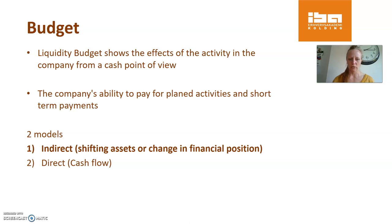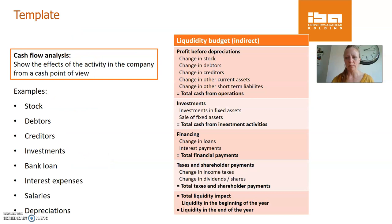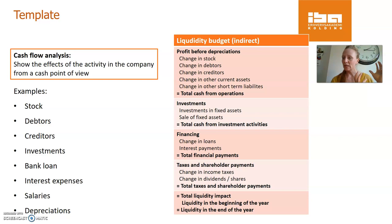Here I will show you the template for how to make the liquidity budget in the indirect model — the shifting asset model. Basically, what we will do is pay attention to all accounts that somehow are tying up liquidity throughout a budget period. The beginning point is a profit before depreciations, or earning contributions, from the income statement budget that we have made. Then we take a look at our expectations for what is going to happen on stock, the inventory of the company — is it going to increase or decrease?